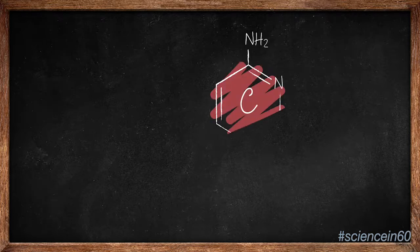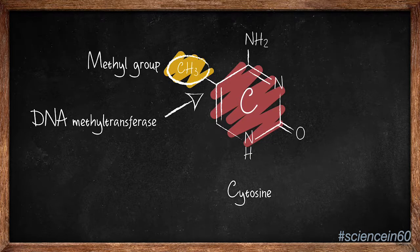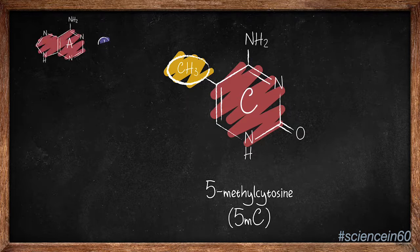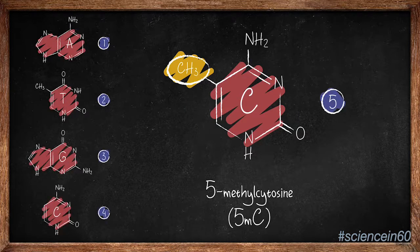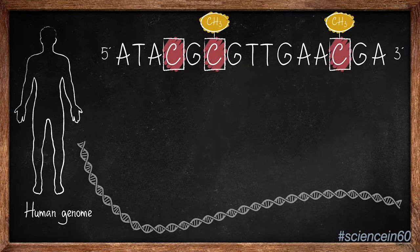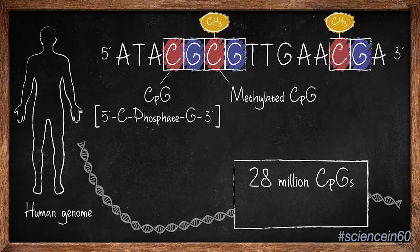The most common methylation modification is found on cytosines, where DNA methyltransferase adds a methyl group to the fifth carbon to make 5-methylcytosine, or 5-MC. 5-MC is often considered to be the fifth base of DNA. In humans, methylated cytosines are frequently found next to guanines, and these are known as CpGs. There are 28 million CpGs in the human genome, and approximately 70% of these are methylated.